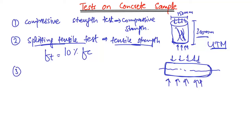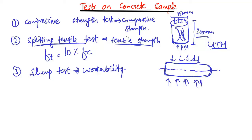The third important test is the slump test, which is mostly performed in the field or in the laboratory to check the workability of the concrete — that is, how well the concrete flows during actual construction.